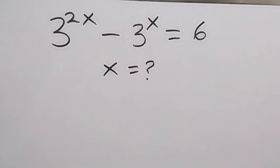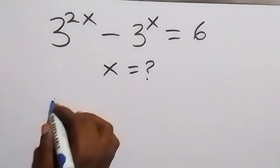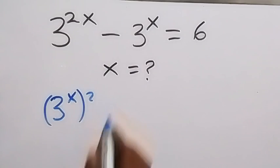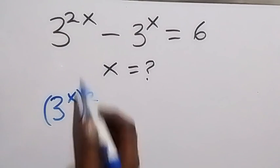Hello, you are welcome. How to solve this nice algebraic equation? First, we can write this as 3 raised to power x, then all square. This is the same thing as 3 raised to power 2x because this power multiplies.